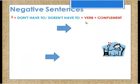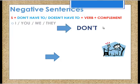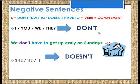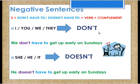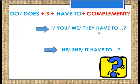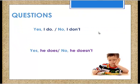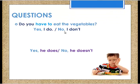The negative form would be 'don't' or 'doesn't have to' plus a verb in the infinitive. I, you, we, they use 'don't' — for example, 'We don't have to get up early on Sundays.' He, she, it use 'doesn't' — for example, 'She doesn't have to get up early on Sundays.' To make a question, use 'do' with I, we, you, they — for example, 'Do you have to eat vegetables? Yes, I do, or no, I don't.' Use 'does' with the singular — for example, 'Does he have to eat vegetables? Yes, he does, or no, he doesn't.'